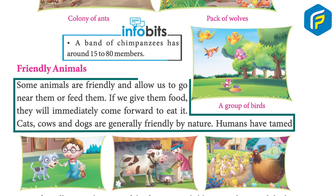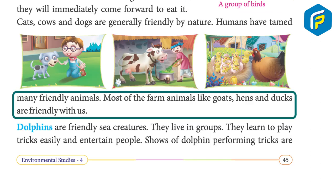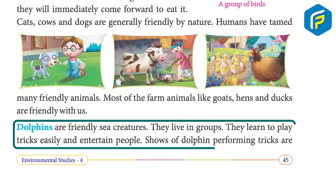Some animals are friendly and allow us to go near them or feed them. If we give them food, they will immediately come forward to eat it. Cats, cows, and dogs are generally friendly by nature. Humans have tamed many friendly animals. Most farm animals like goats, hens, and ducks are also friendly with us.